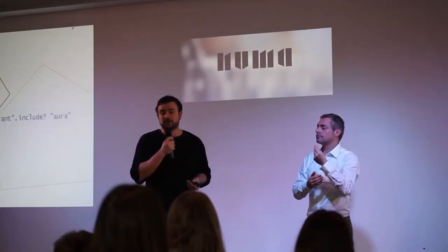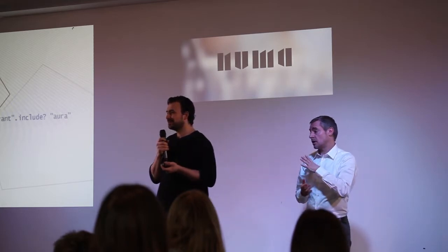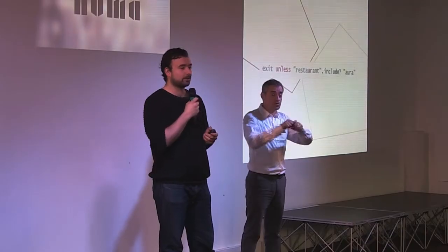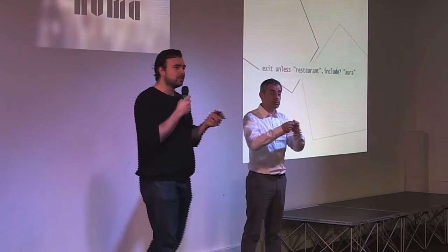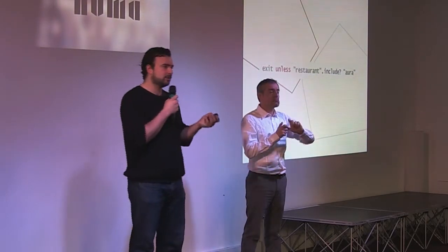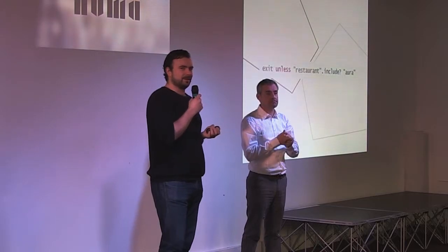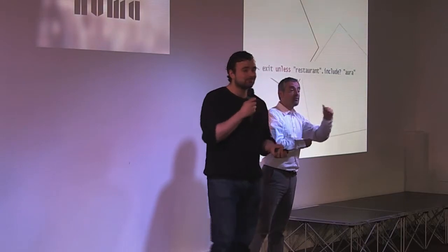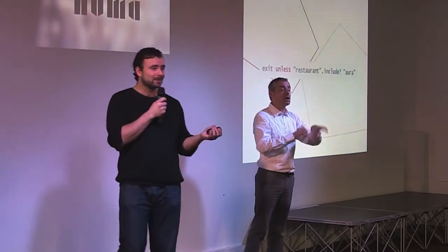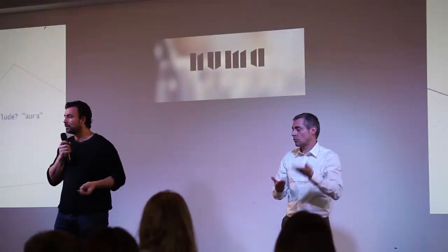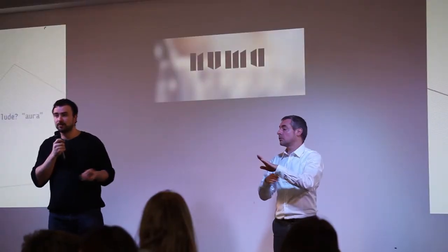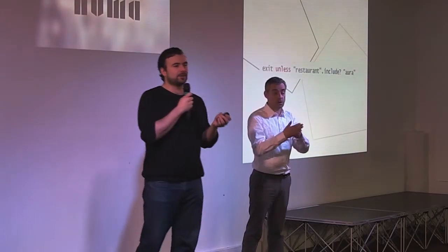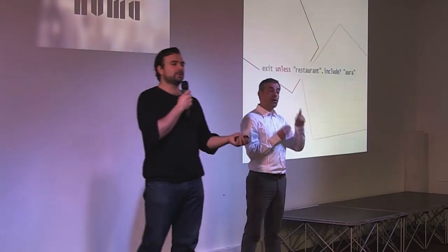Ça implique ce qu'on appelle chez nous la commoditisation des moyens de production logiciels. La commoditisation, c'est un processus économique qui désigne le fait qu'un bien de luxe, un bien rare, devienne un bien de grande consommation. Par exemple, la télévision dans les années 30, c'était un bien de luxe. Aujourd'hui, une télévision, vous pouvez en avoir pour 5 euros chez Emmaüs. Et on a l'impression que ce processus s'applique aux moyens de production logiciels.